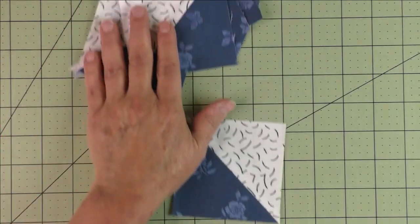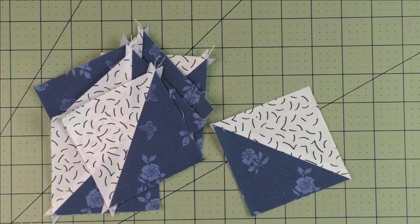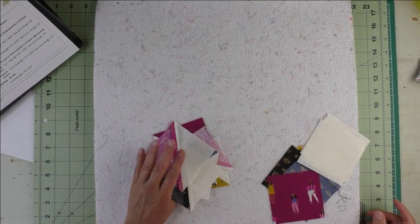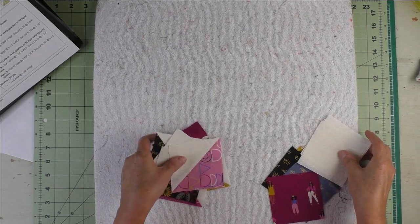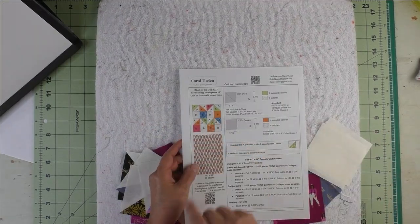That's the half square triangles eight at a time. Our half square triangles are pieced and pressed. Now we just take out the pattern board, lay out the pieces according to the diagram.